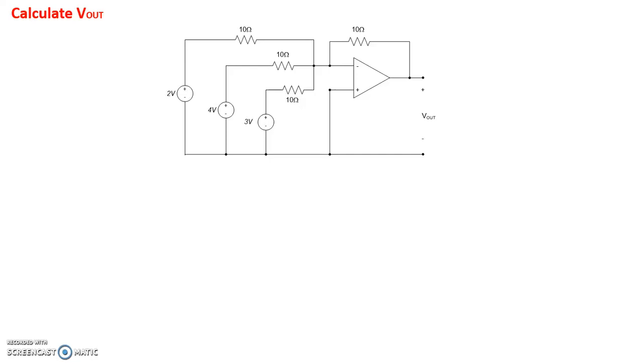Alright, now that we've learned about inverting and non-inverting amplifier topologies, let's take a look at this particular example circuit. The goal is to figure out what is the voltage output. In this particular case, this circuit looks slightly different from the simple inverting amplifier that we looked at. In this case, we have three separate voltage sources.